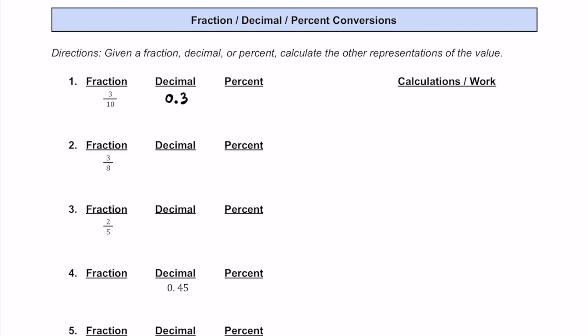If you weren't sure about that, you can take this 3 tenths and multiply top and bottom both by 10. If you multiply both by 10, you get 30 over 100, which is also equal to 0.30 or 30 hundredths, which is also 3 tenths. You can do that if you want to get it out of 100.